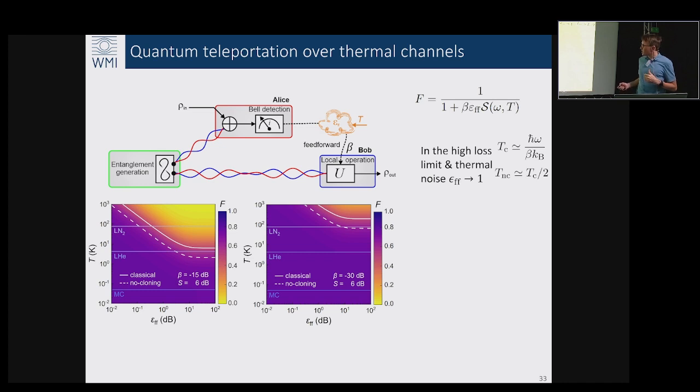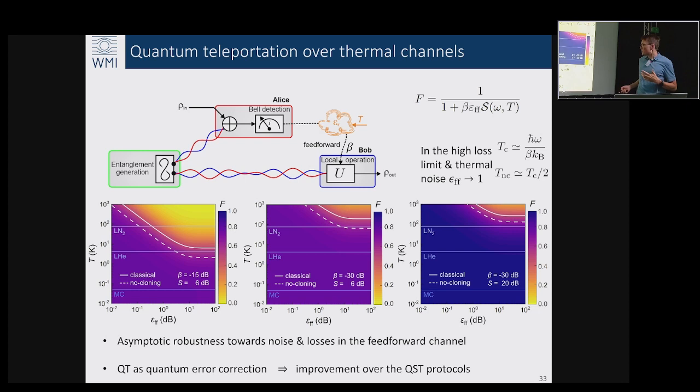The claim here is that it works and we are continuing to improve this experiment. One of the interesting observations which we made by analyzing the potential of this protocol is that we can tolerate more noise or larger temperatures of our entanglement distribution and feedforward channels because of the simple fact that quantum teleportation actually just corrects for the losses and noise in the feedforward channel.